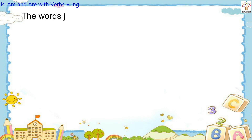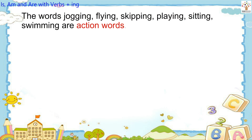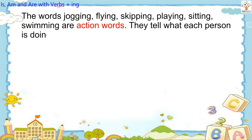The words jogging, flying, skipping, playing, sitting, swimming are action words. They tell what each person is doing in the picture right now.